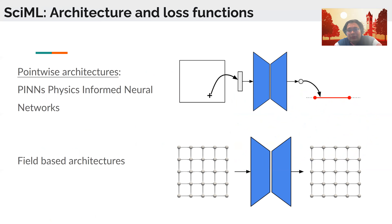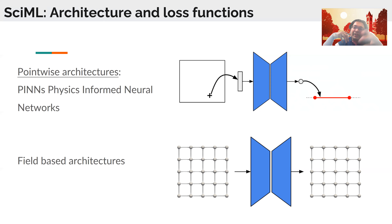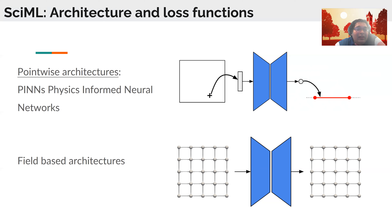Going deeper into the taxonomy and landscape of scientific machine learning, we classify architectures into point-wise architectures and field-based architectures. If you have a neural network making point predictions — for instance, given a partial differential equation, I provide x and y coordinates and it gives me the output temperature or quantity of interest — that's a point prediction. In the past three or four years there's been an explosion of work on physics-informed neural networks and their variants.